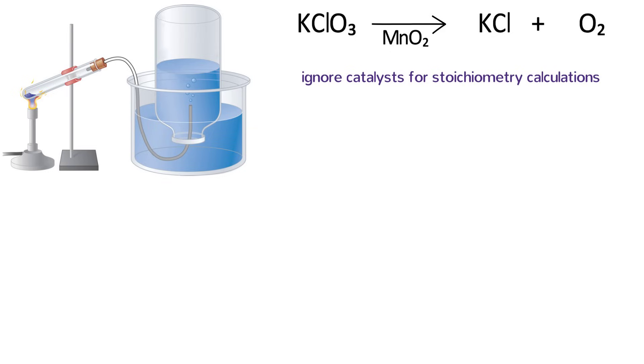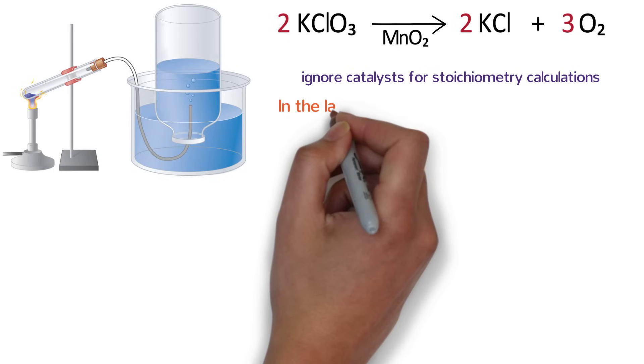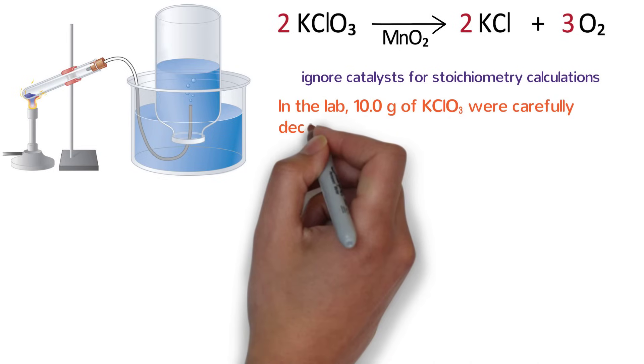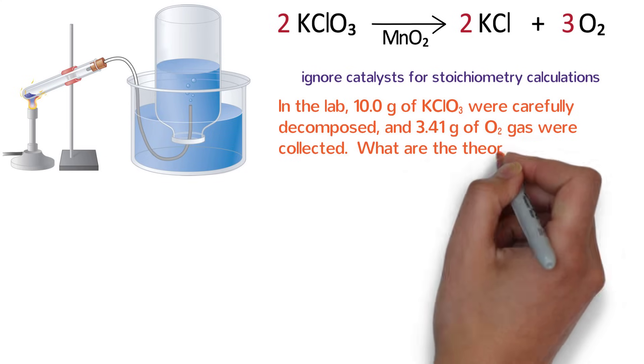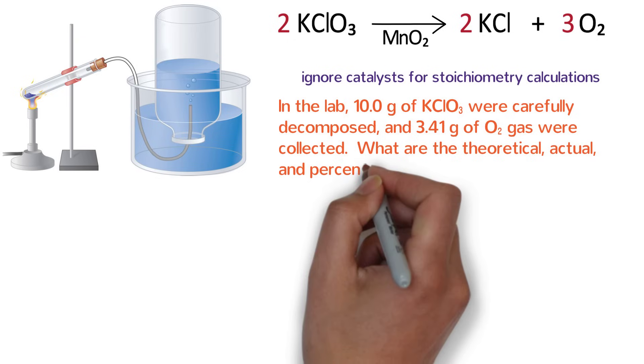As it is written, the reaction is not balanced, so let's go ahead and fix that. There are three oxygens on the left side, and two oxygens on the right side. So we put a 2 in front of potassium chlorate, and a 3 in front of O2 to give us six oxygens on both sides. This messed up potassium and chlorine, which we can balance by writing a 2 in front of potassium chloride. Now that the reaction is balanced, let's go ahead and see what the question is. In the lab, 10 grams of potassium chlorate were carefully decomposed, and 3.41 grams of oxygen gas were collected. What are the theoretical, actual, and percent yields of the reaction?